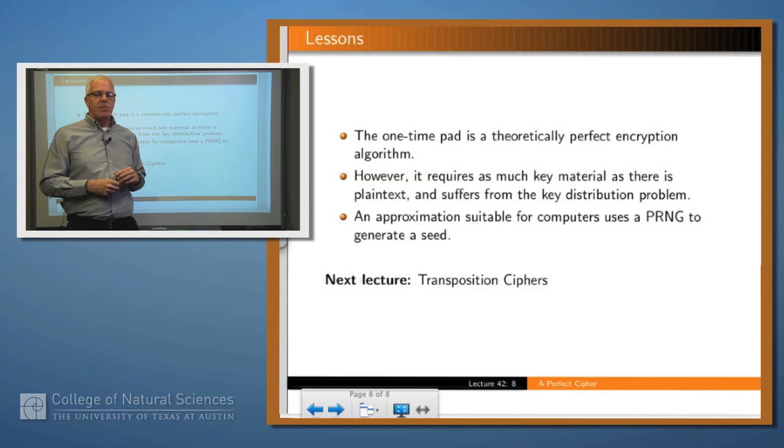Okay, so what have we said? We said that the one-time pad is a theoretically perfect encryption algorithm, and we've explained why that is. The problem is practical rather than theoretical. It requires just as much key as you have plaintext, and so that really leads to the key distribution problem. Approximation, which is often used on computers, is to generate the key using a pseudo-random number generator, which works pretty well, but doesn't give you really the strength of the one-time pad. Thank you.